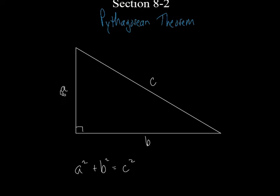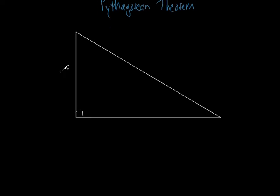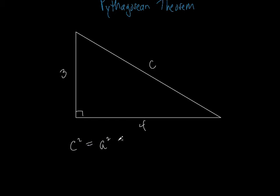Let's put some numbers in here and figure out how to find a missing side. Let's say one leg is three, the other is four, and we're trying to find C. You should know that without even doing any math — C should be five. Let's verify with the Pythagorean theorem. Instead of writing A squared plus B squared equals C squared, I'm going to rearrange it to C squared equals A squared plus B squared. It's the same thing, just rearranged.